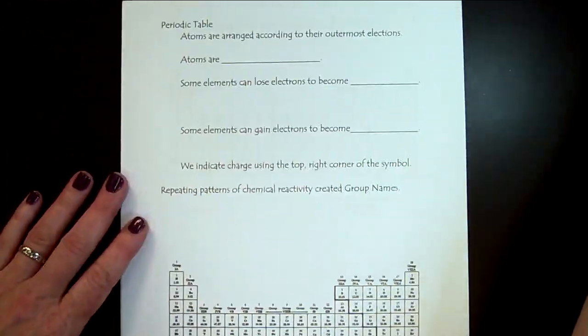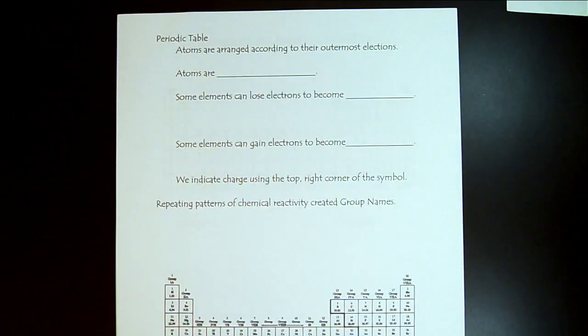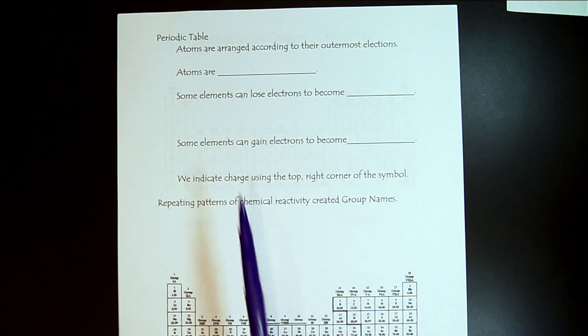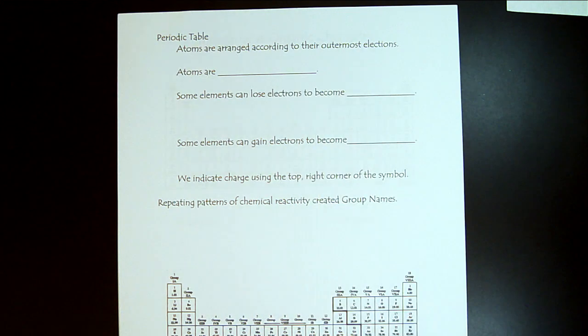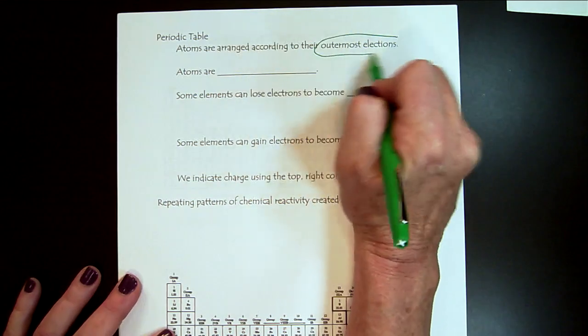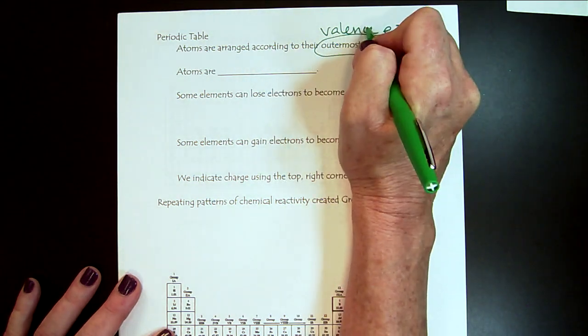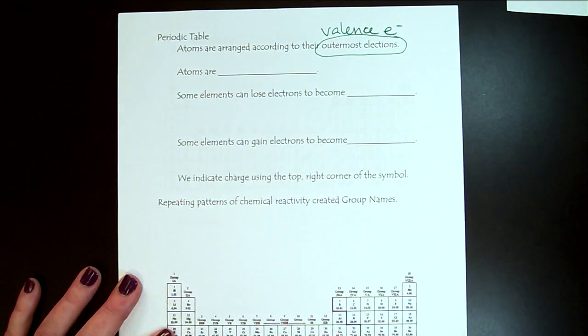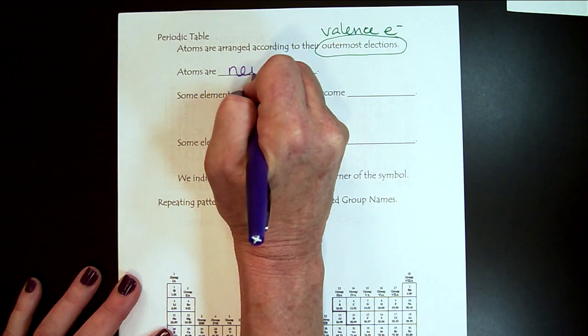Now we can go to the next page. When we look at the periodic table here, the atoms are arranged according to their outermost electrons. So basic knowledge. Outermost electrons, those are called valence electrons. It's important to learn this term.